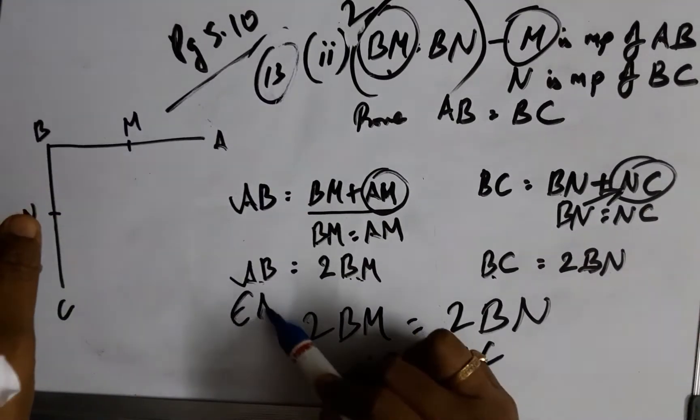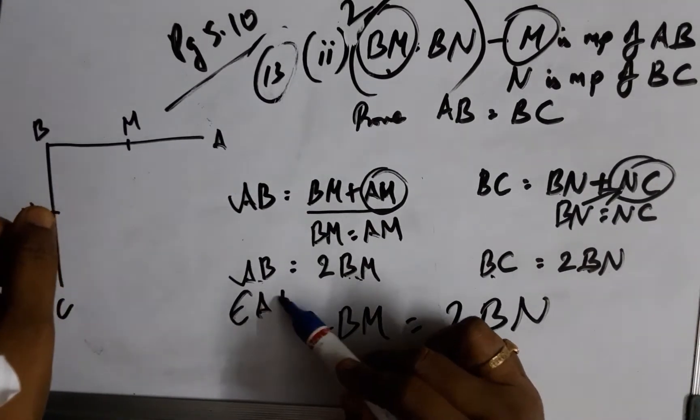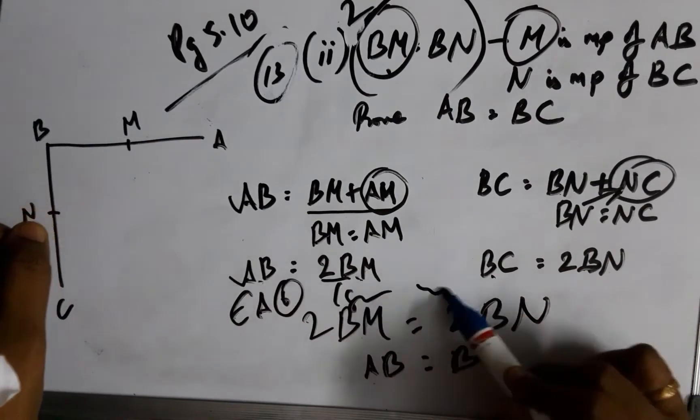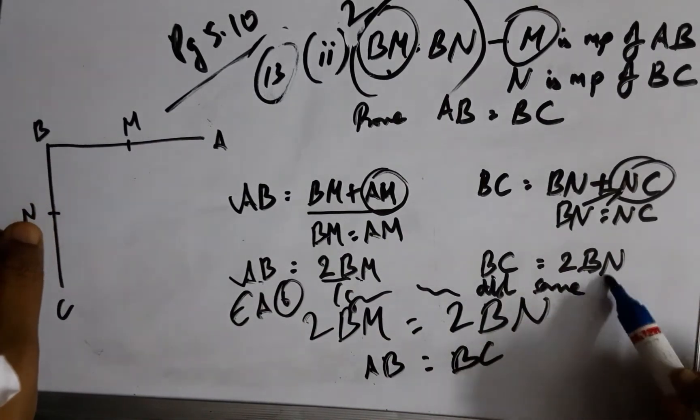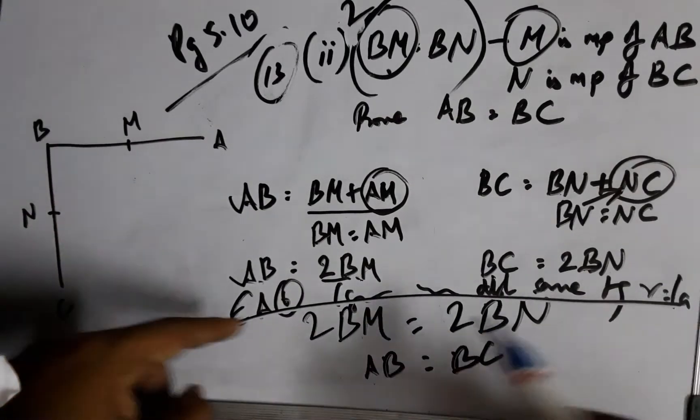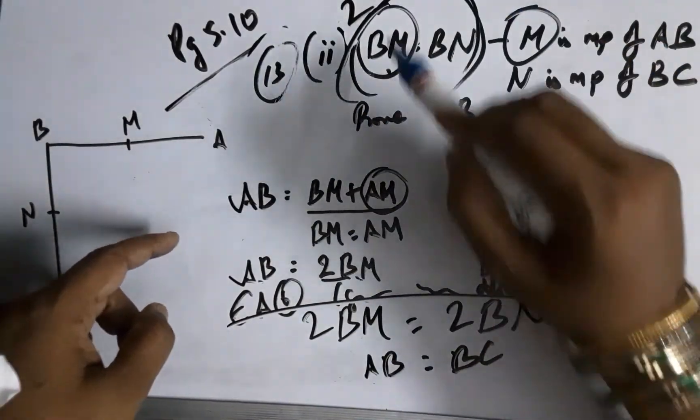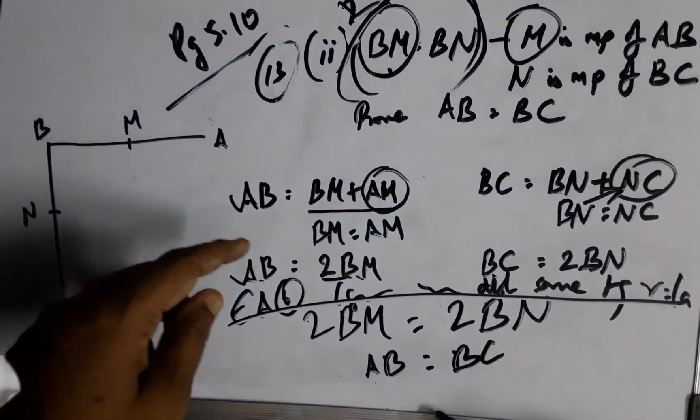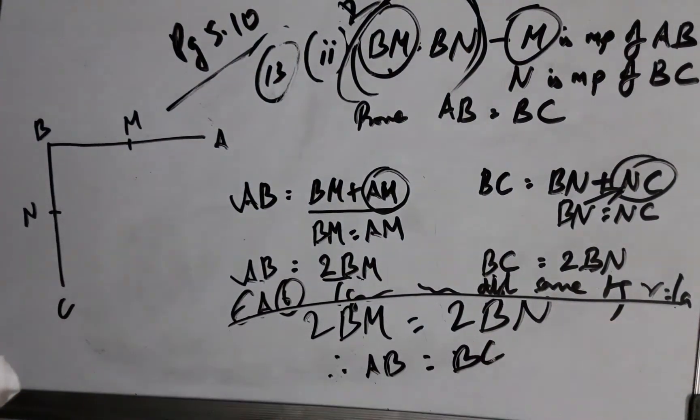I have to mention the Euclid's axiom number 6 completely: things which are double of the same thing are equal to one another. I have to write it out and then I have to put in these two things under bracket and make the twice of it and then I have to conclude.